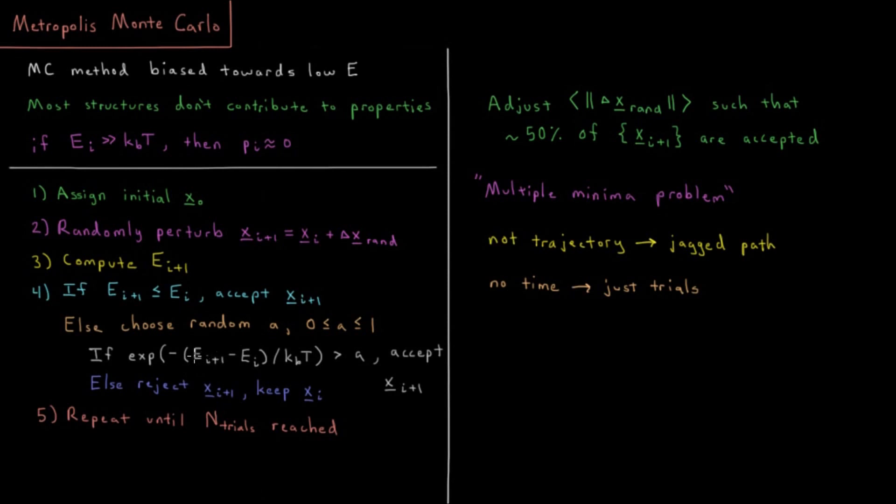That helps you to move around on the surface away from whatever local minimum you're near. And the higher the temperature is, the more likely you are to accept a higher energy configuration, because that means your Boltzmann factors are all going to start getting bigger at higher energies. So then we're going to repeat this until we reach a desired number of trials, and then we'll average our properties over all of the given configurations that we have.